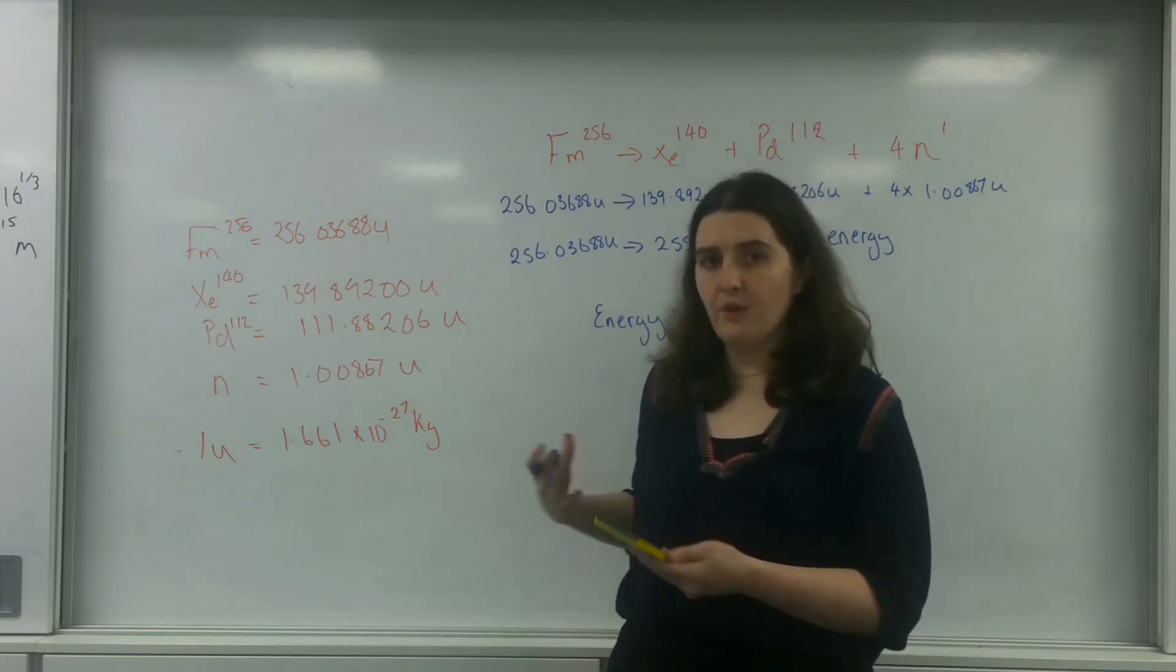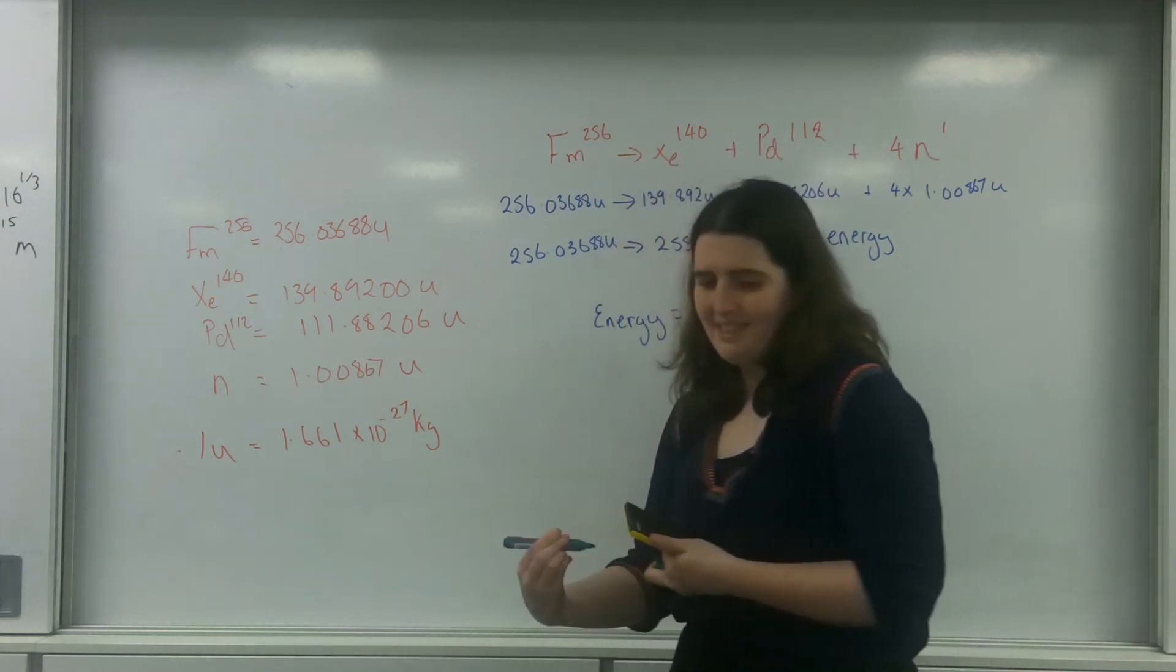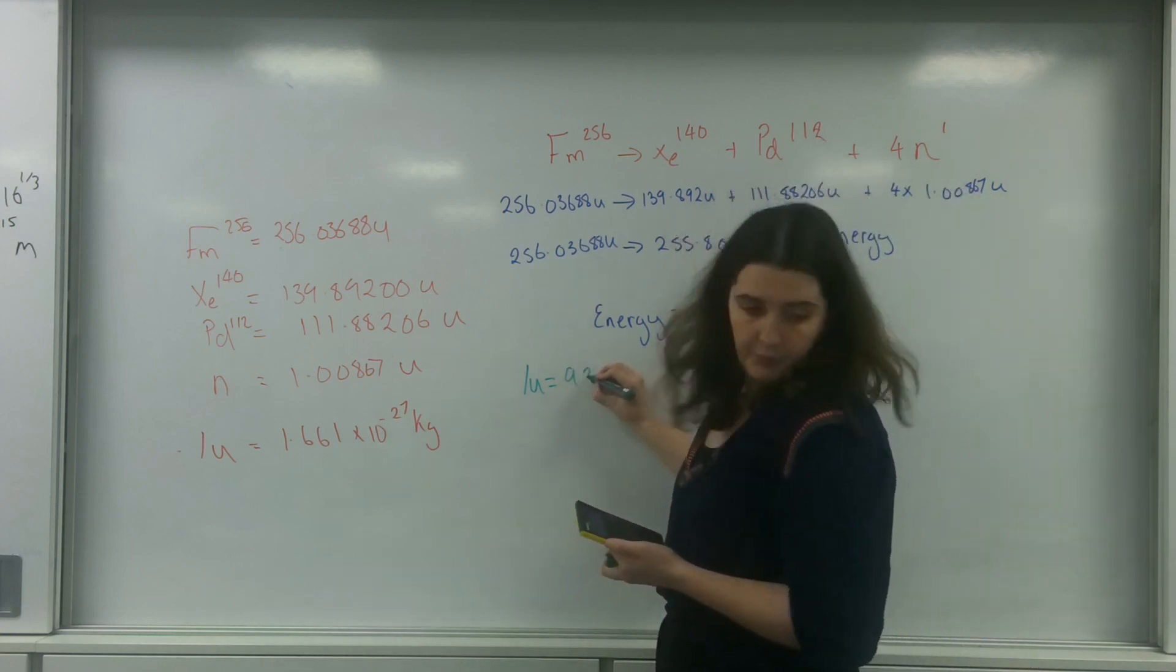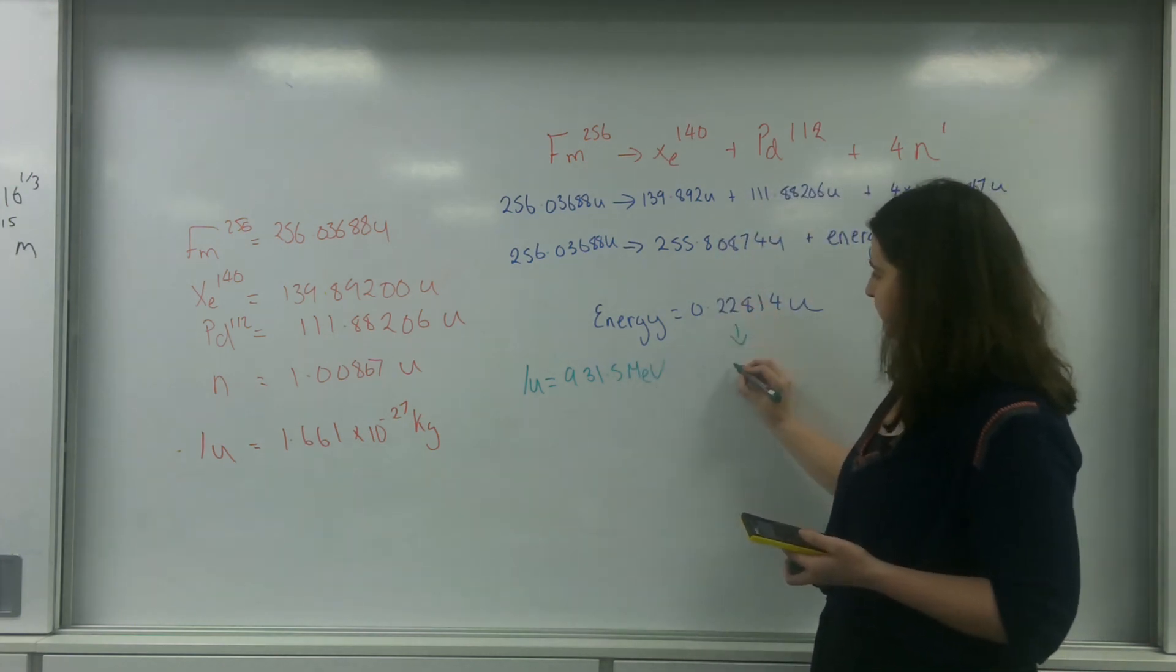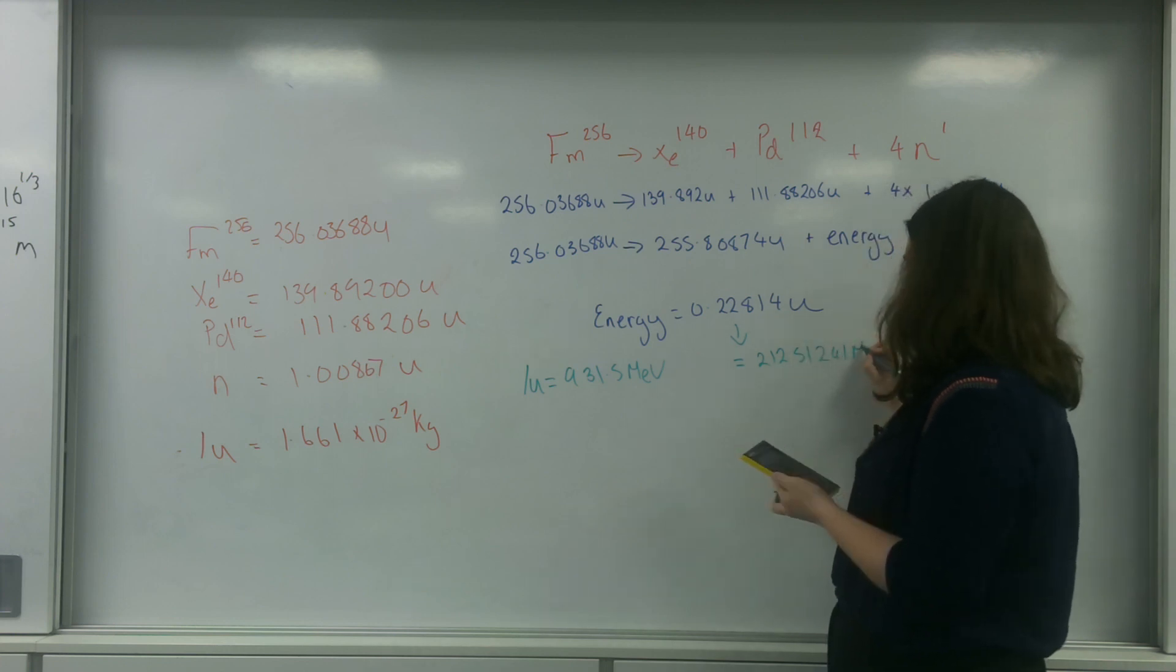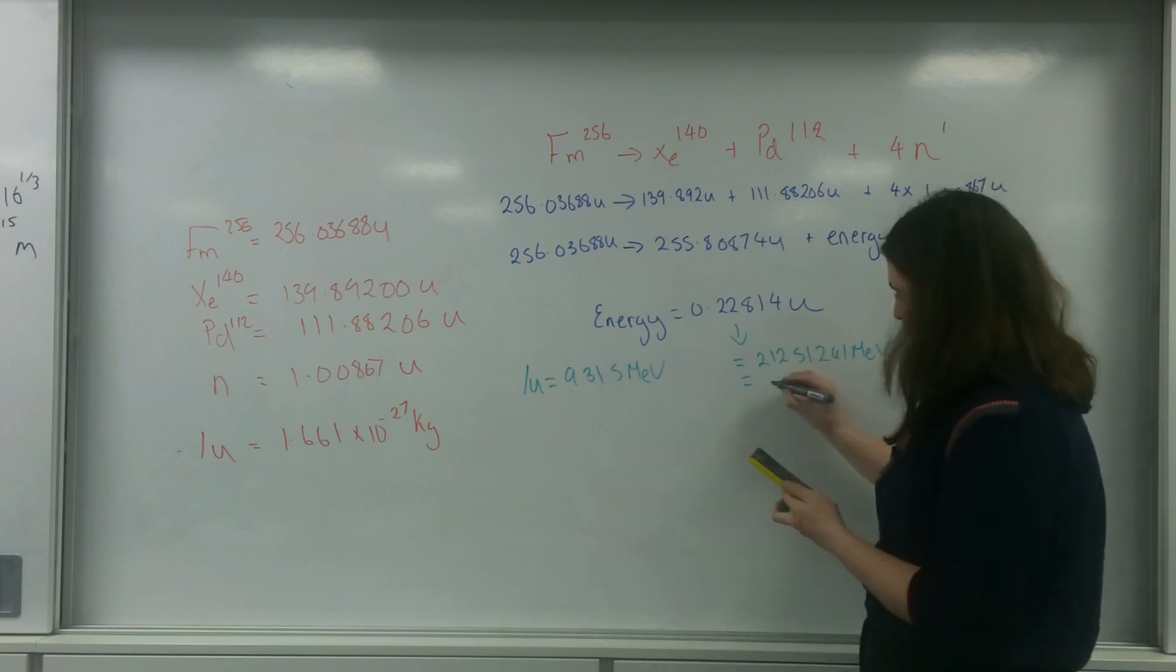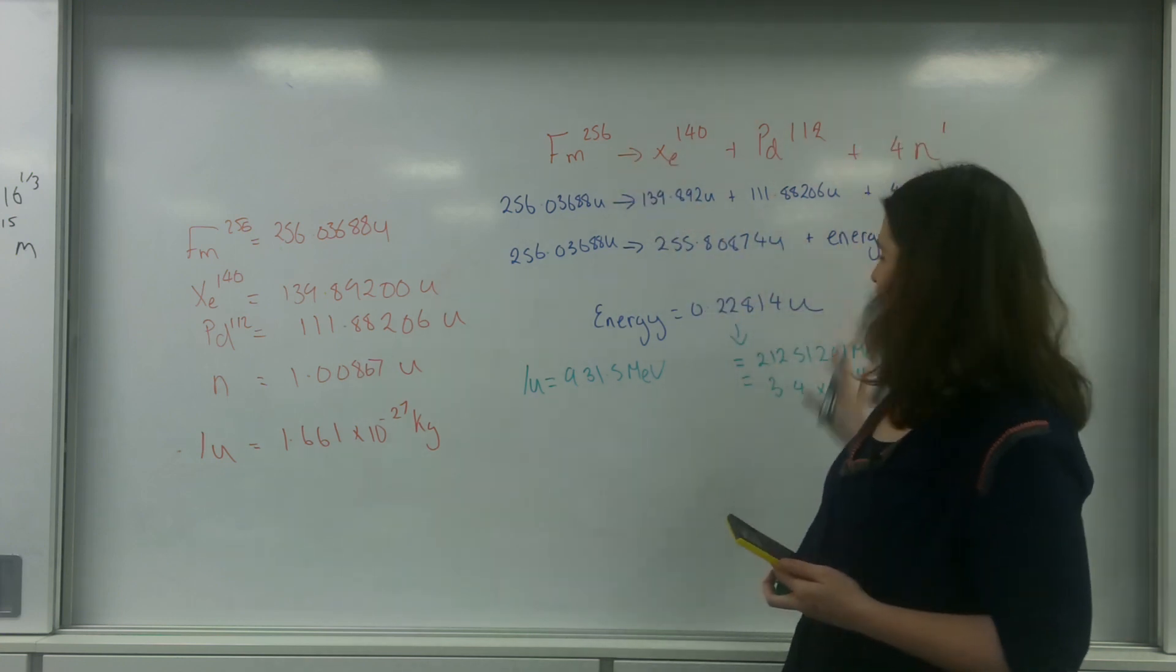There are multiple ways you can do this to find out how much that is in joules. I'm going to do it both ways. I know from my data sheet that 1 U equals 931.5 megaelectron volts. So this equals 212.51241 MeV, which equals, times 1.6 times 10 to the minus 19, 3.4 times 10 to the minus 11 joules. So this one interaction is going to give me this much energy in joules.